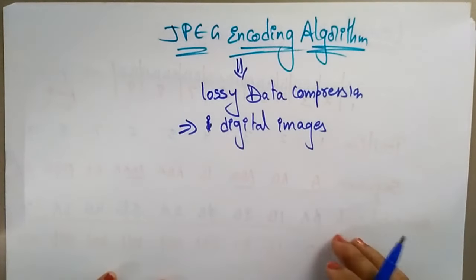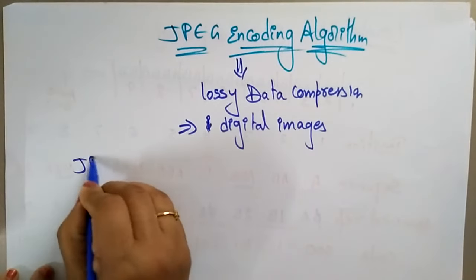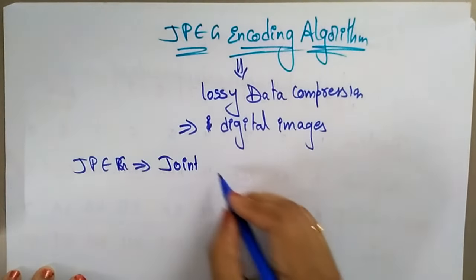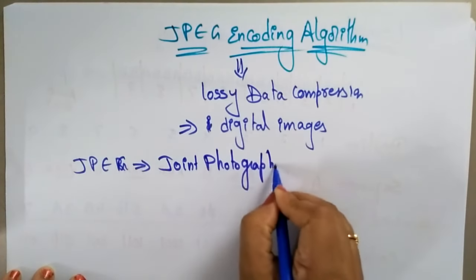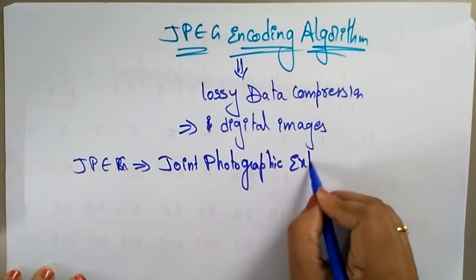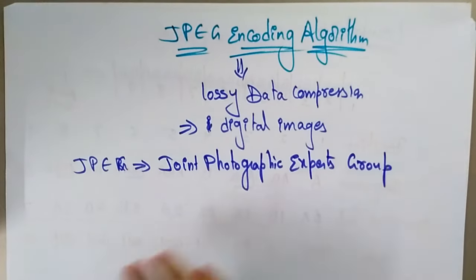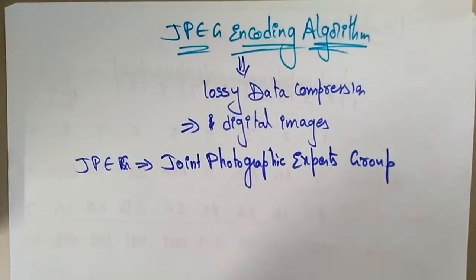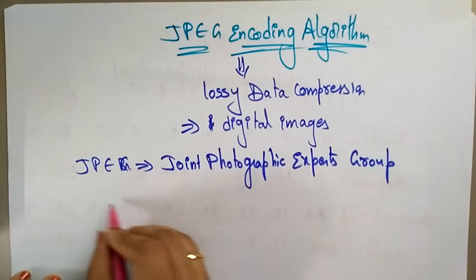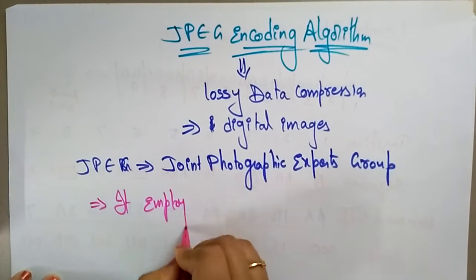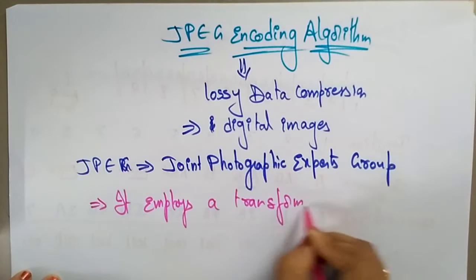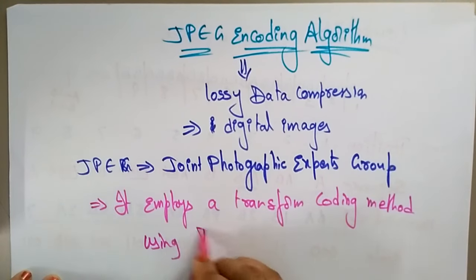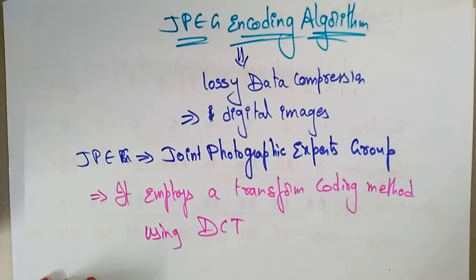JPEG stands for: J means Joint, P means Photographic, E means Experts, G means Group — so JPEG is Joint Photographic Expert Group. It is actually a lossy compression algorithm for digital images. What it employs is a transform coding method.